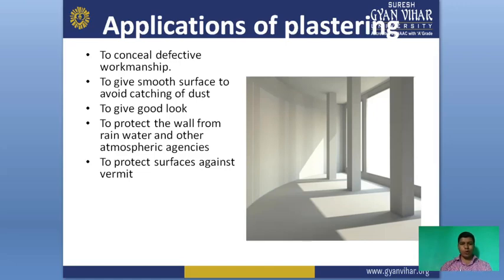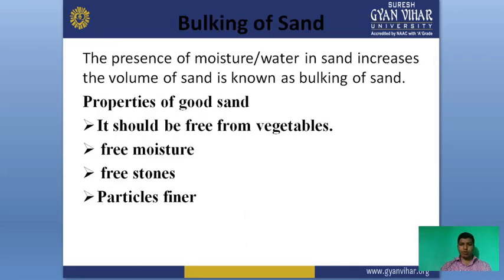Plastering gives a smooth surface and avoids catching of dust, gives a good look, and protects the wall from rainwater and atmospheric agencies. It also protects the wall from fungi and other particles in the atmosphere. Sand is used for plastering and also in concrete. The bulking of sand refers to the presence of moisture in sand increasing the volume of sand — this process is known as bulking of sand.